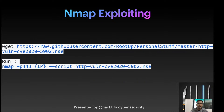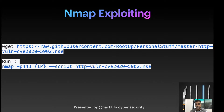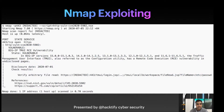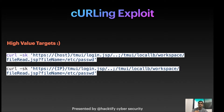We can identify if any server is vulnerable using a particular Nmap script. There's an NSE script you can download using the wget command shown on screen, then run it to identify if the target server is vulnerable. Once you run the Nmap script, the output will show the vulnerable BIG-IP TMUI RCE vulnerability with state 'vulnerable', confirming the target is vulnerable.